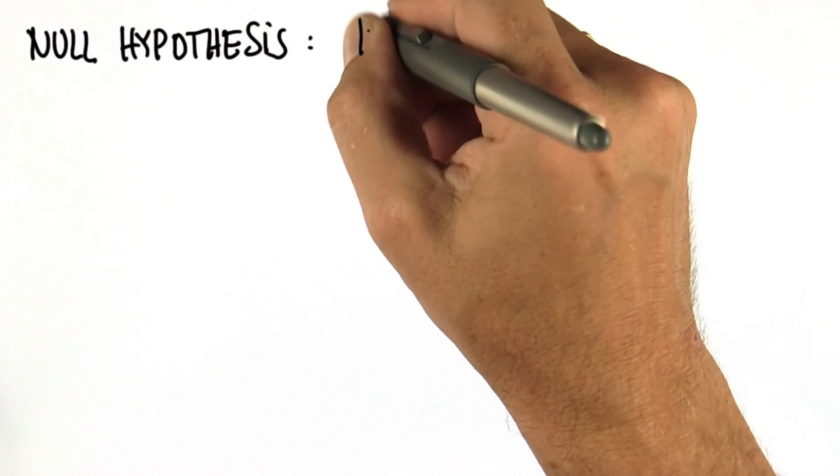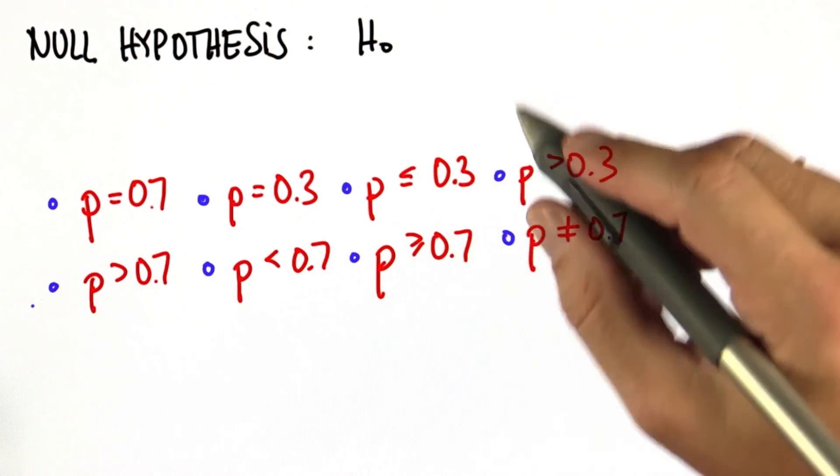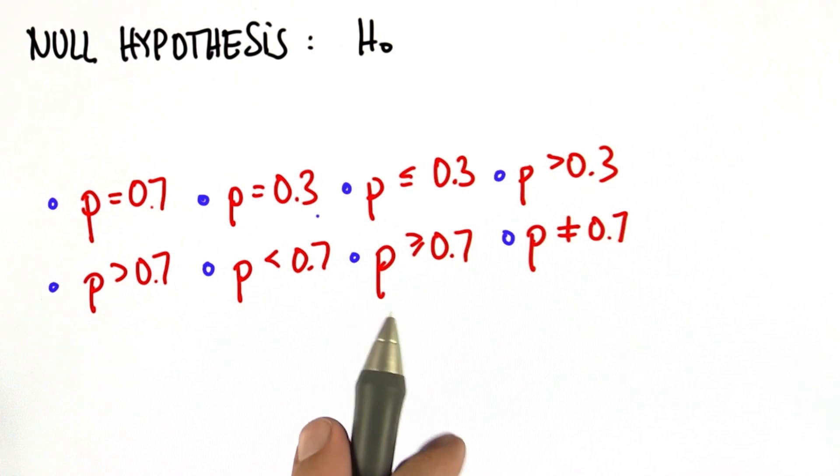So let's first ask, what's our null hypothesis? Here are eight choices for the probability of heads. Pick the one that best describes the null hypothesis.